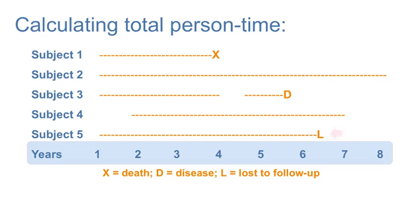A subject's person time is the amount of time they are at risk. So, events like death, or X, developing the outcome of interest, or D, and loss to follow-up, L, mean that the person is no longer at risk for the following time period.